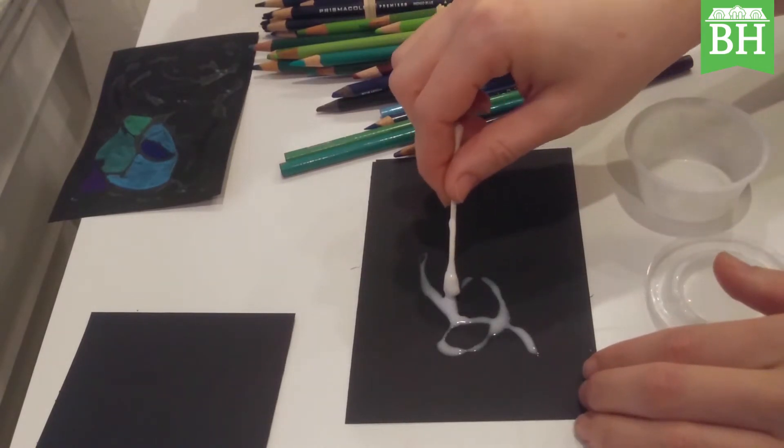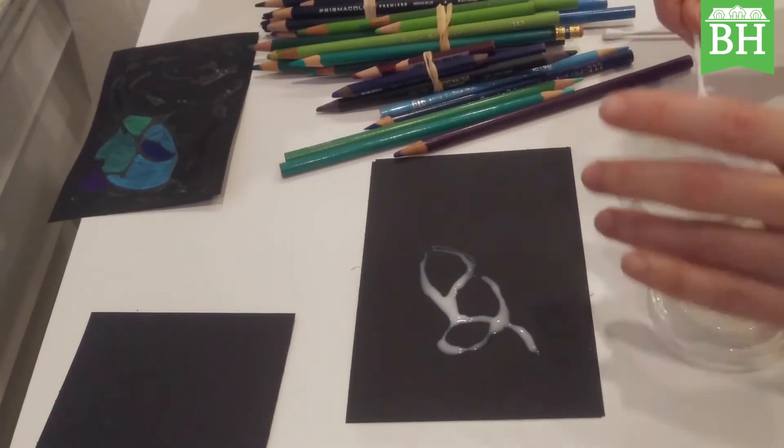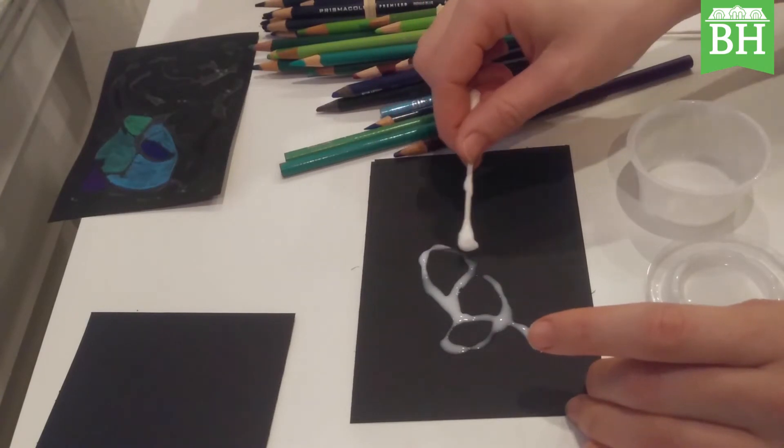If you find your glue getting a little bit sticky, too sticky, too thick, add just a tiny bit of water to it and mix it thoroughly. It'll make it flow better.